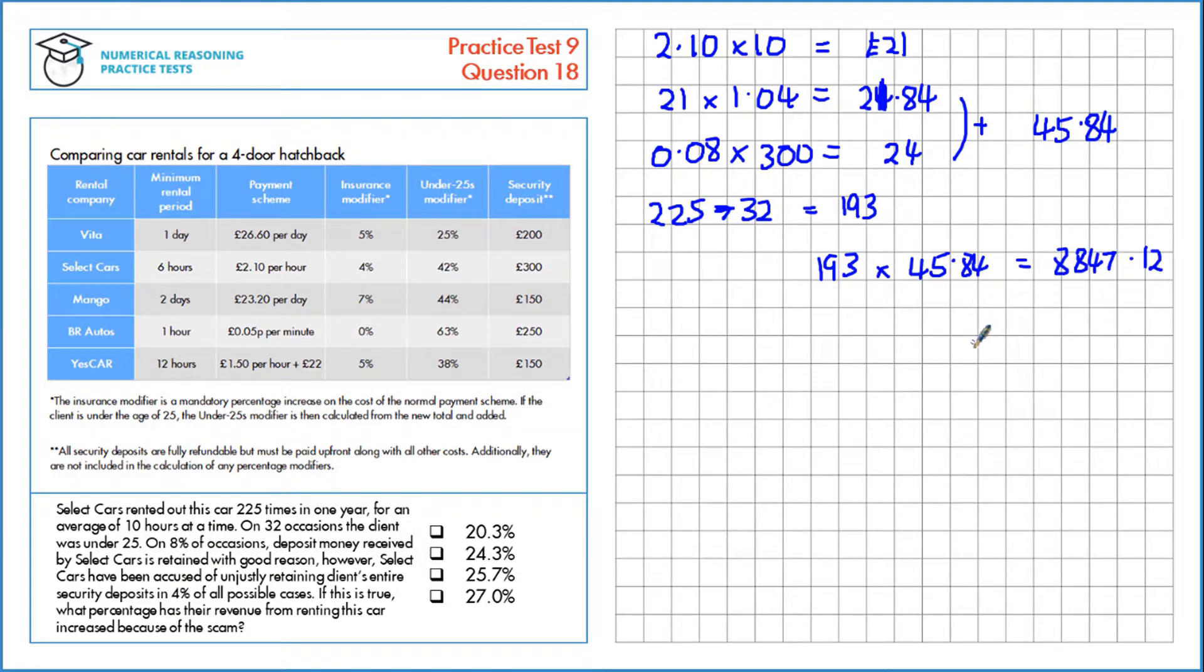Now, let's look at the under 25s. The base cost stays the same, so this is the same as before, and this amount is the same too. But there's an additional multiplier here of 42%. We've got to increase this base cost by 42%, which is the same as multiplying by 1.42, which is £31.01.